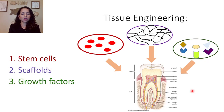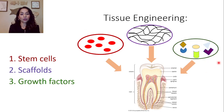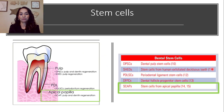I made a quick schematic highlighting how three factors work in conjunction. The three main things we focus on in tissue engineering are: number one, stem cells; number two, scaffolds; and number three, growth factors. We're going to talk about each of them in detail.